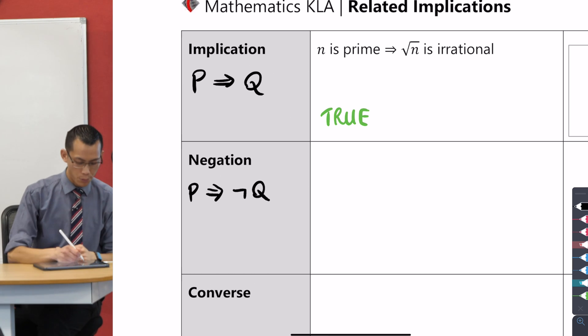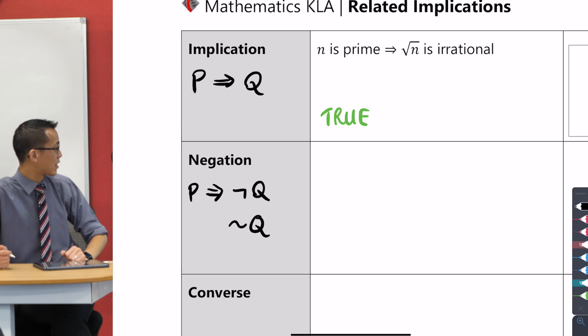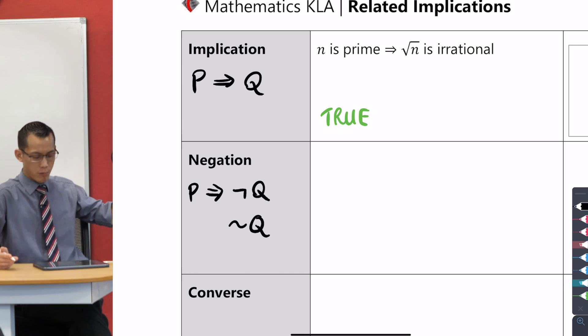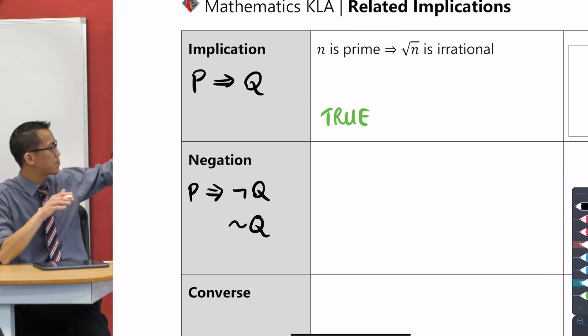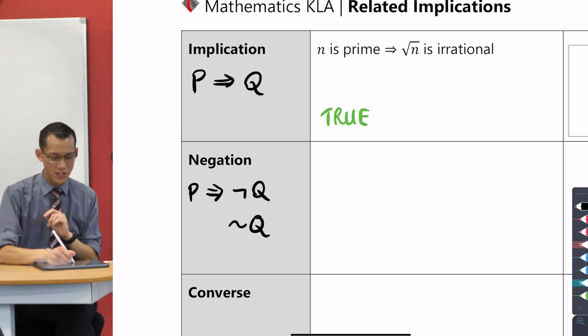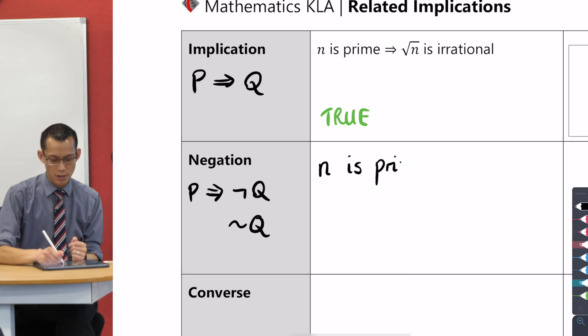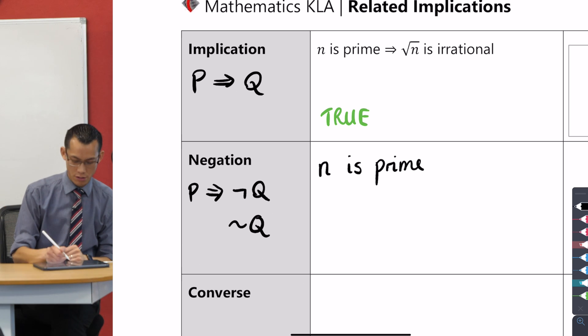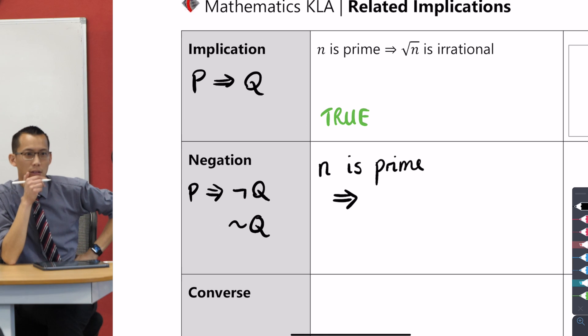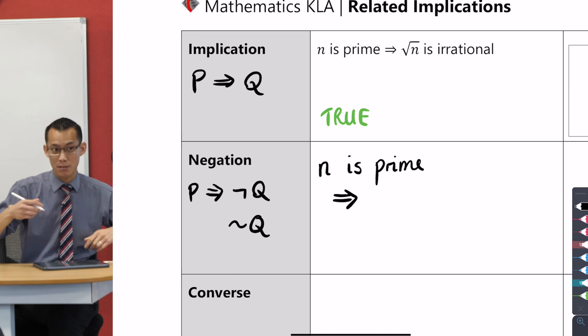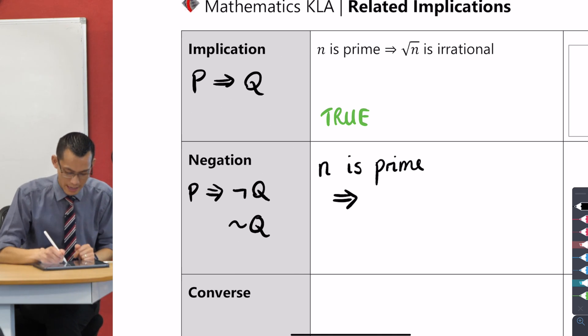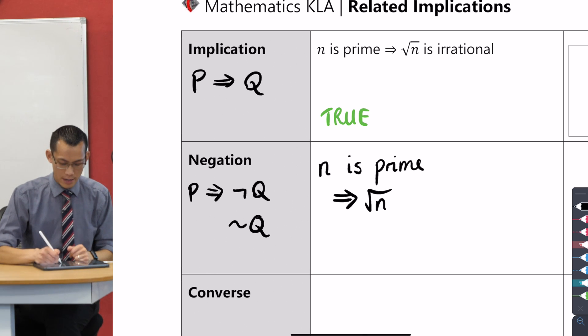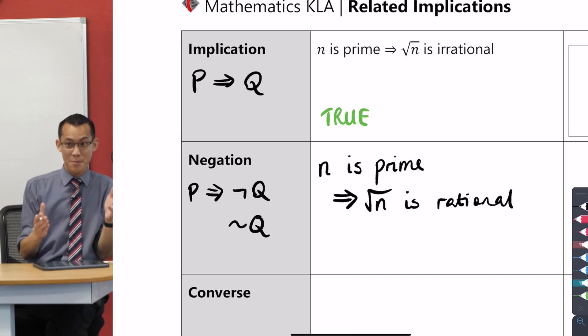So P implies not Q. What would that look like for this particular example? We're still considering P being the same, so n is prime, that thing is unchanged. And then I'm considering is it true that that implies now what would be the negation of Q? The opposite of Q? Root n is rational. Root n is—if you're not irrational you're rational. So let's write that down. There's our not Q. The square root of n is rational.